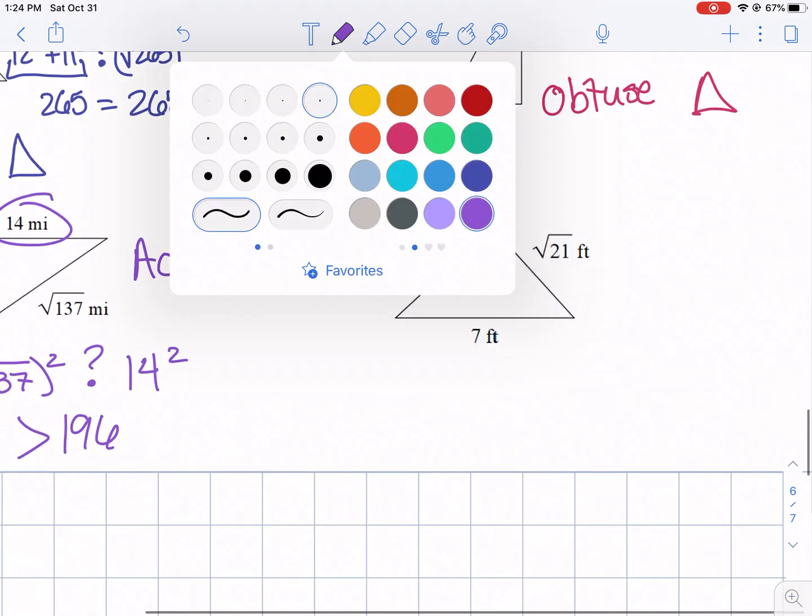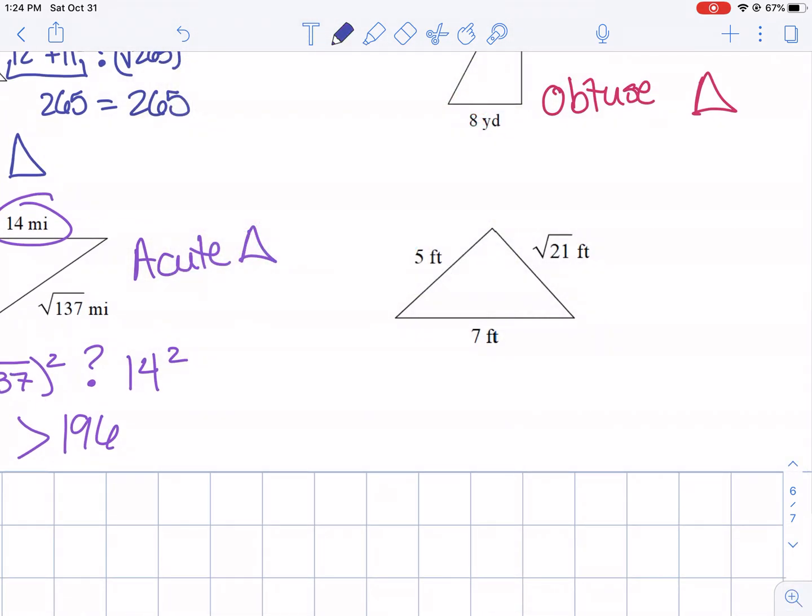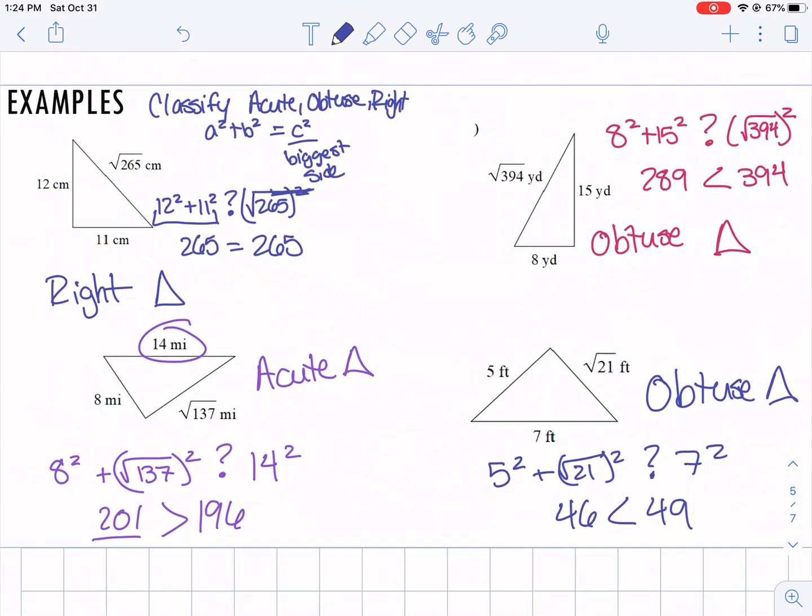And then our last example here. 5 squared plus the square root of 21 squared, and how is it related to 7 squared? So 5 squared plus the square root of 21 squared is 46. That is less than 49, so then this is another obtuse triangle. And that's how we use the Pythagorean theorem and its converse to determine if it's acute, obtuse, or right.